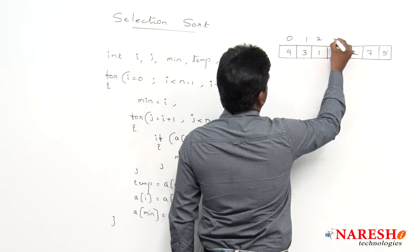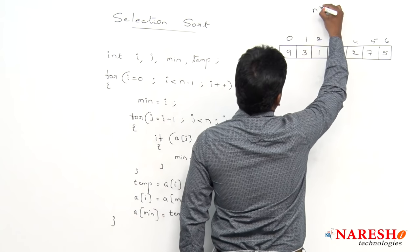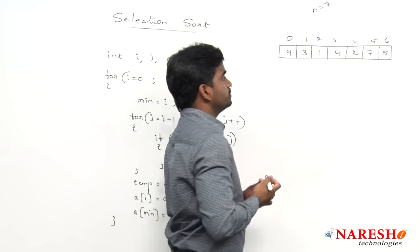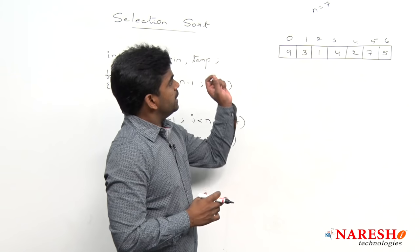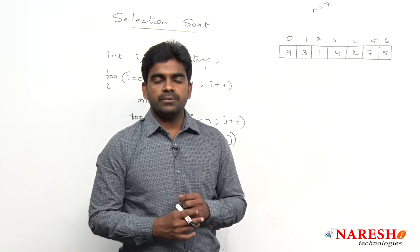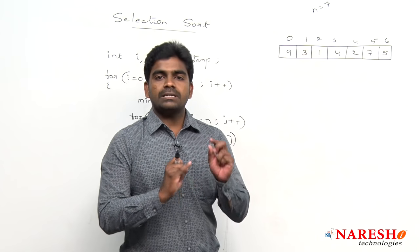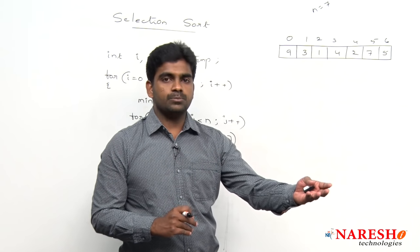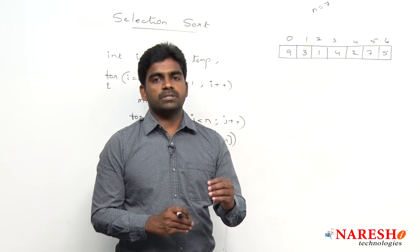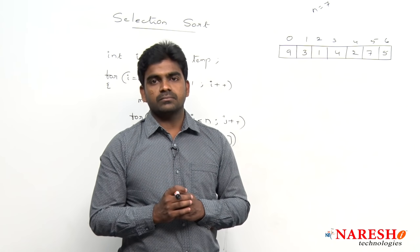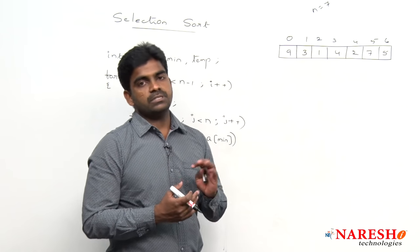N value is 7. We already know from bubble sort that if there are 7 total elements, we need to sort only 6. Whenever you sort 6 elements, the 7th element automatically gets its position. So the outer loop repeats exactly 6 times. First, let me explain the theory before the code.